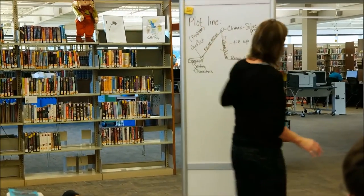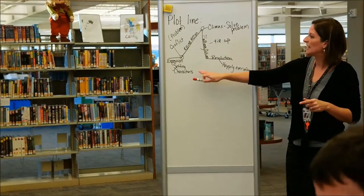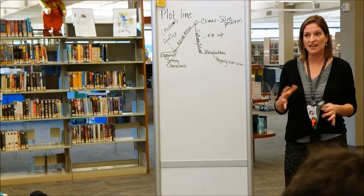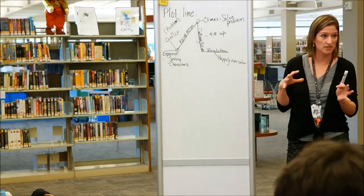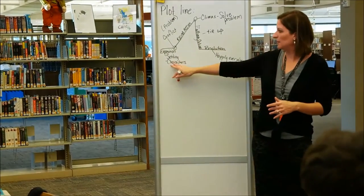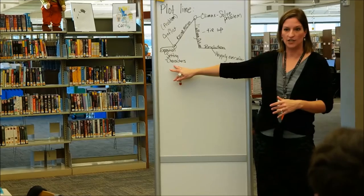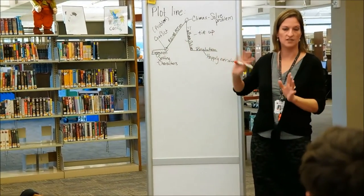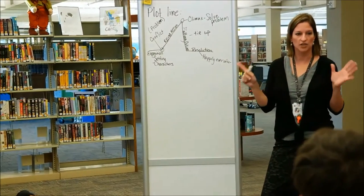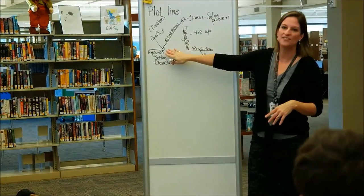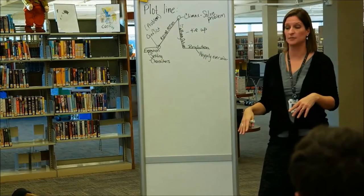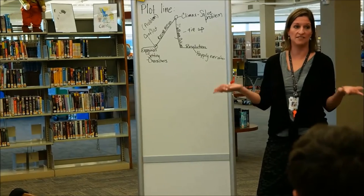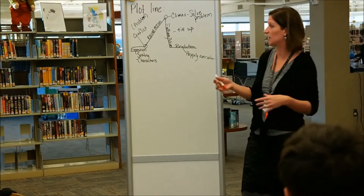You have your plot line here. In the exposition — which in your six-minute video may be fairly short, and that's okay — you want to establish some sort of setting and characters. You must have some sort of conflict, and in a six-minute video that had better come up pretty quickly. You only have six minutes, so how long can you fiddle around and not have a conflict?